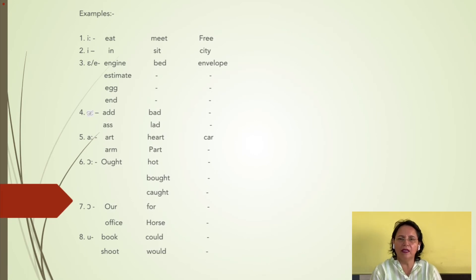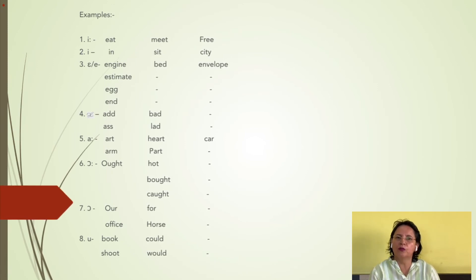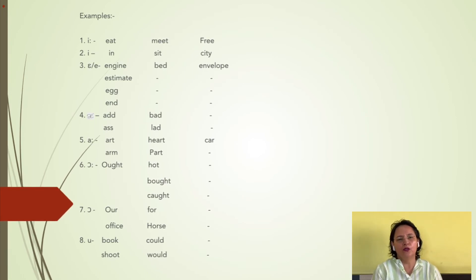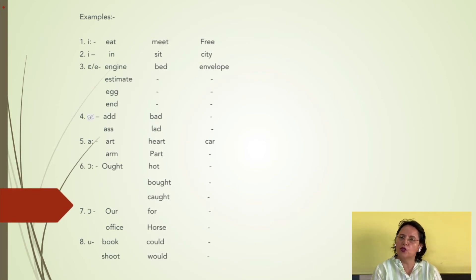Coming to vowel number eight, which is /ʊ/. You have it in words like 'book', 'shook', 'could', 'would'. This sound is very close to half-close position. It is also back, and is an example of closed lip rounding. Here the two lips are protruded in the form of whistling, and the sound is comparatively shorter because it does not have the length mark.